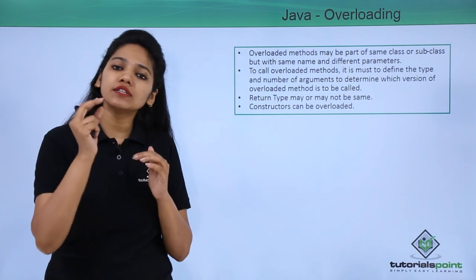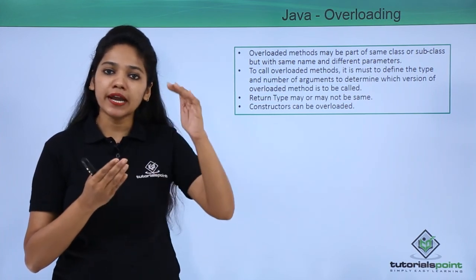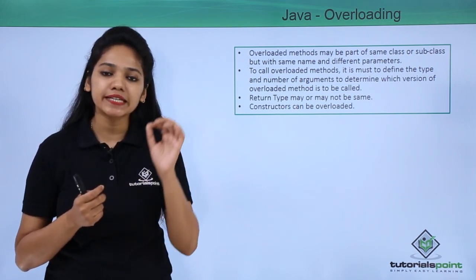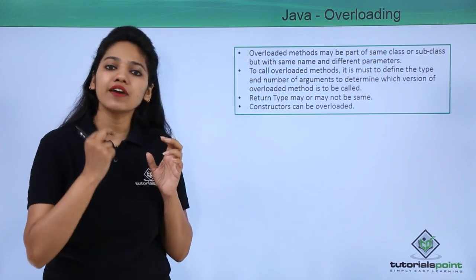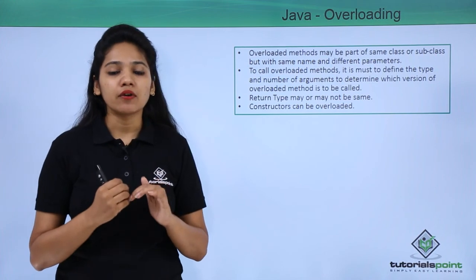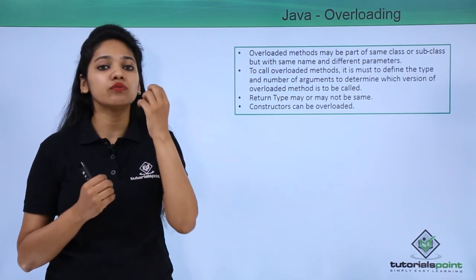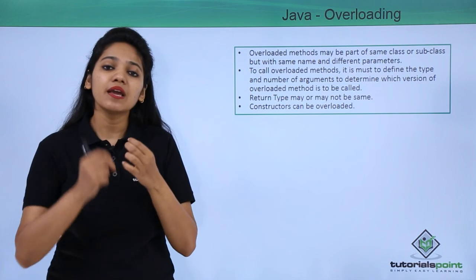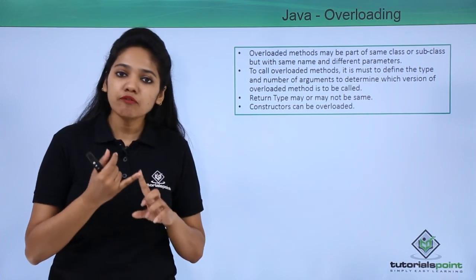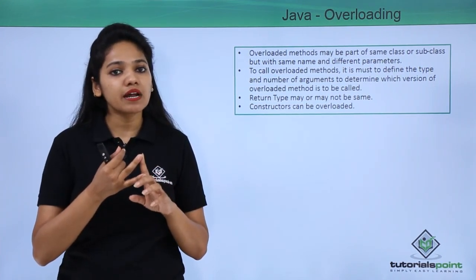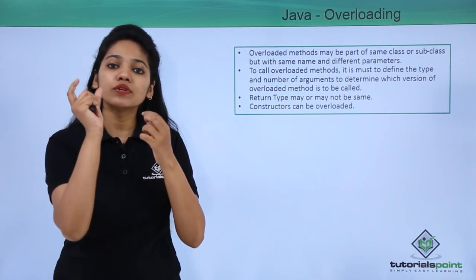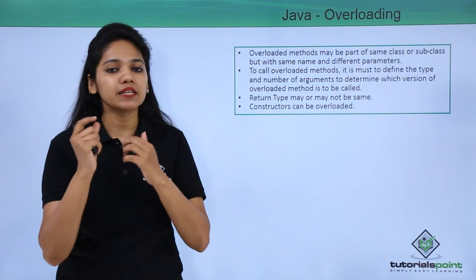What are the rules on these parameters? You can define the same method name, for example 'addition', but with different parameters. When we say different parameters, it means the type of parameter, the sequence of parameters, and the list of parameters should be different. The number of arguments passed within the parameter of a method should be different.